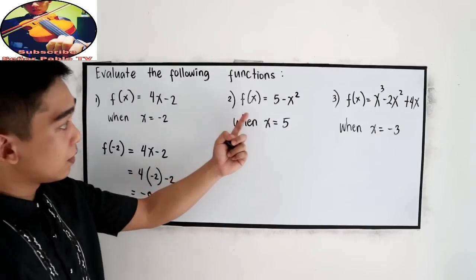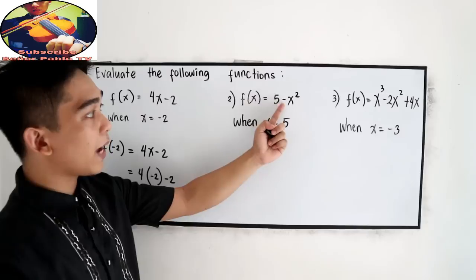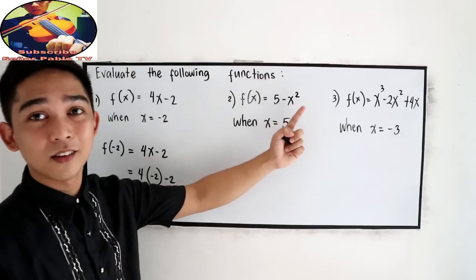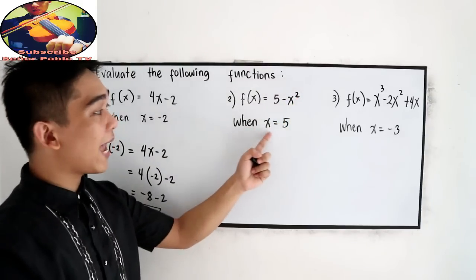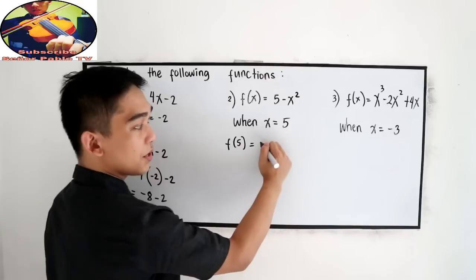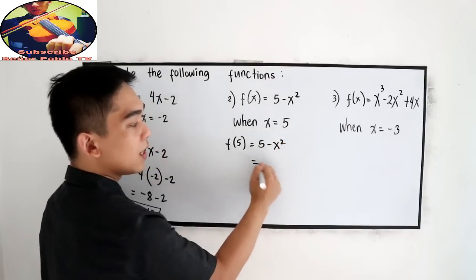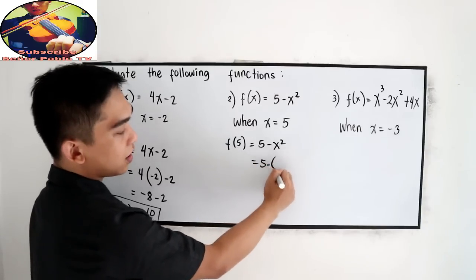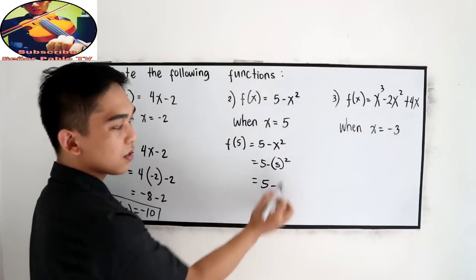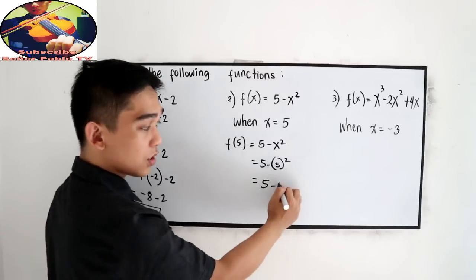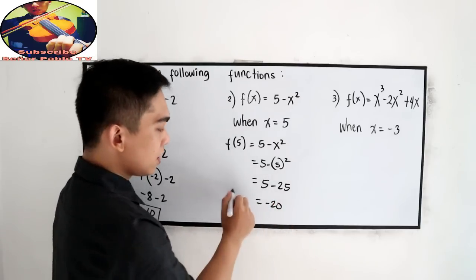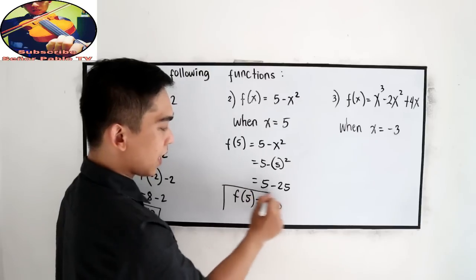Next, number 2: f of x is equal to 5 minus x squared. This is a quadratic function because our exponent is 2, when x is equal to 5. So f of 5 — copy the original given — 5 minus x squared. Now let us substitute: 5 minus 5 squared. 5 squared is 5 times 5, which is 25. So 5 minus 25 is negative 20. So f of 5 is equal to negative 20.